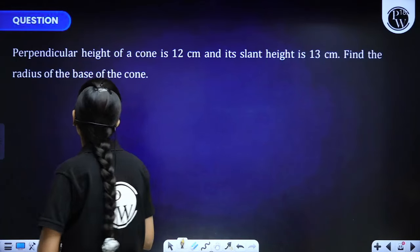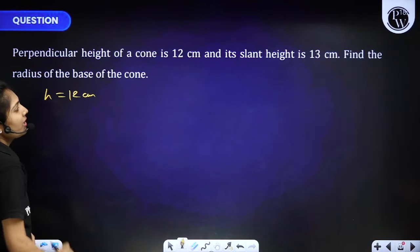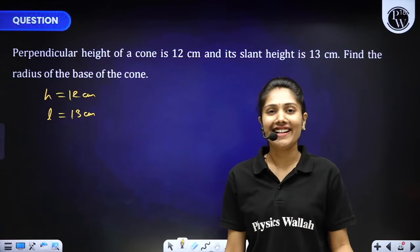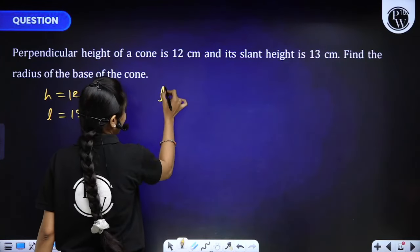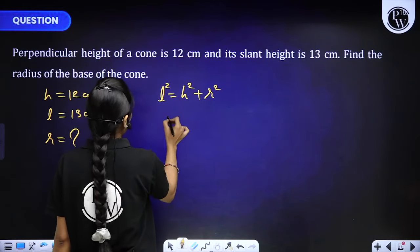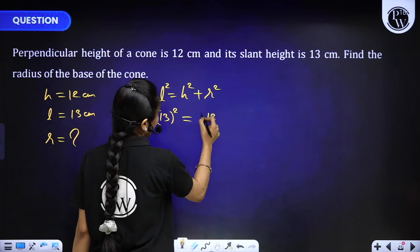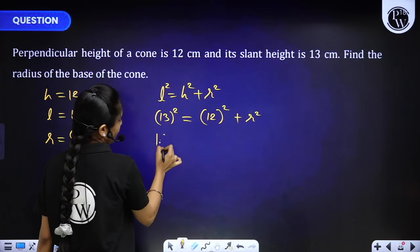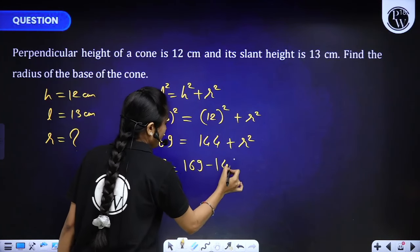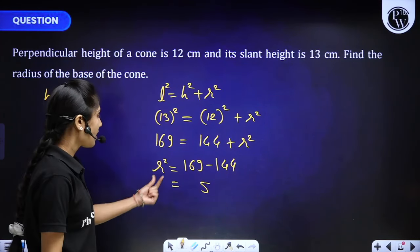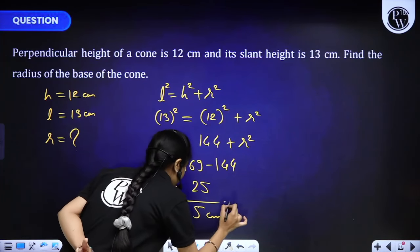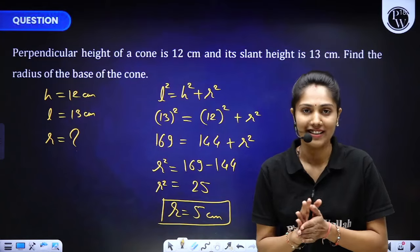Question: the perpendicular height of a cone is 12 cm and its slant height is 13 cm. Find the radius of the base. Using L² = H² + R²: 13² = 12² + R², so 169 = 144 + R², giving R² = 25, therefore radius = 5 cm. Very easy question — just remember the formulas.